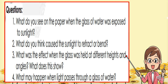Here are the questions to answer after doing the activity: First, what do you see on the paper when the glass of water was exposed to sunlight? Two, what do you think caused the sunlight to refract or bend? Number three, what was the effect when the glass was held at different heights and angles — what does this show? Number four, what may happen when light passes through a glass of water?